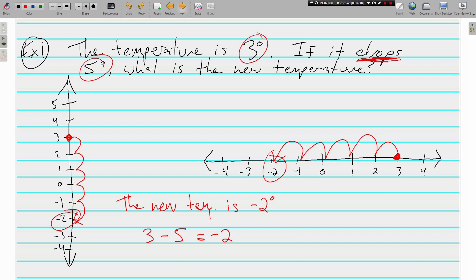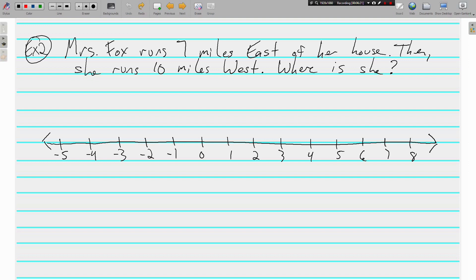And again, if you need to pause the video so that you can write the problem down, go for it. Mrs. Fox runs seven miles east of her house. Then, she runs ten miles west. Where is she? Well, let's find our keywords and important information. Seven miles is going to be important. Ten miles is going to be important. What else is going to be important, though?